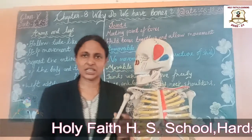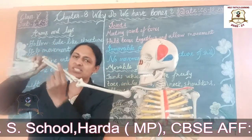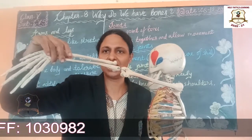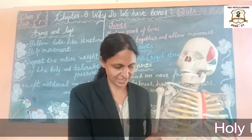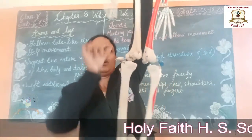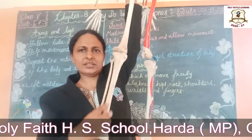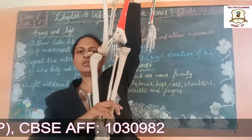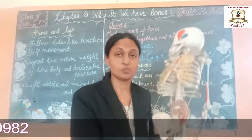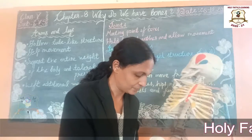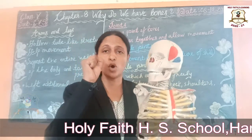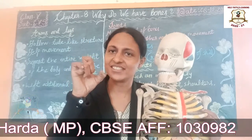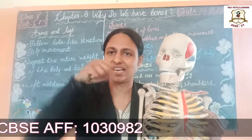There are three long bones in the arms, and also three long bones in the legs. Then there are several small bones as well — both long bones and small bones. In the fingers there are many small bones. There are also joints.